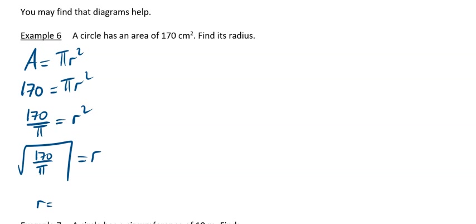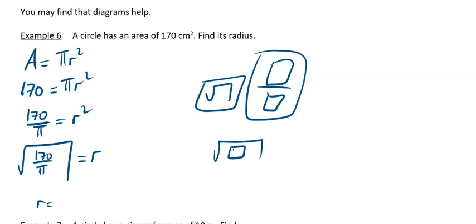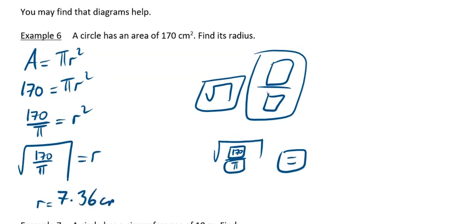To do that on your calculator, press your square root button, then press your fraction button. Put 170 in the top box and pi in the bottom box, then press equals and that will get you the answer. Have a go at that and see if you agree with my answer. I'm doing square root, then the fraction button, 170 in the top line, pi in the bottom line. Press equals and it gives an answer of 7.36 centimeters to 2 decimal places.